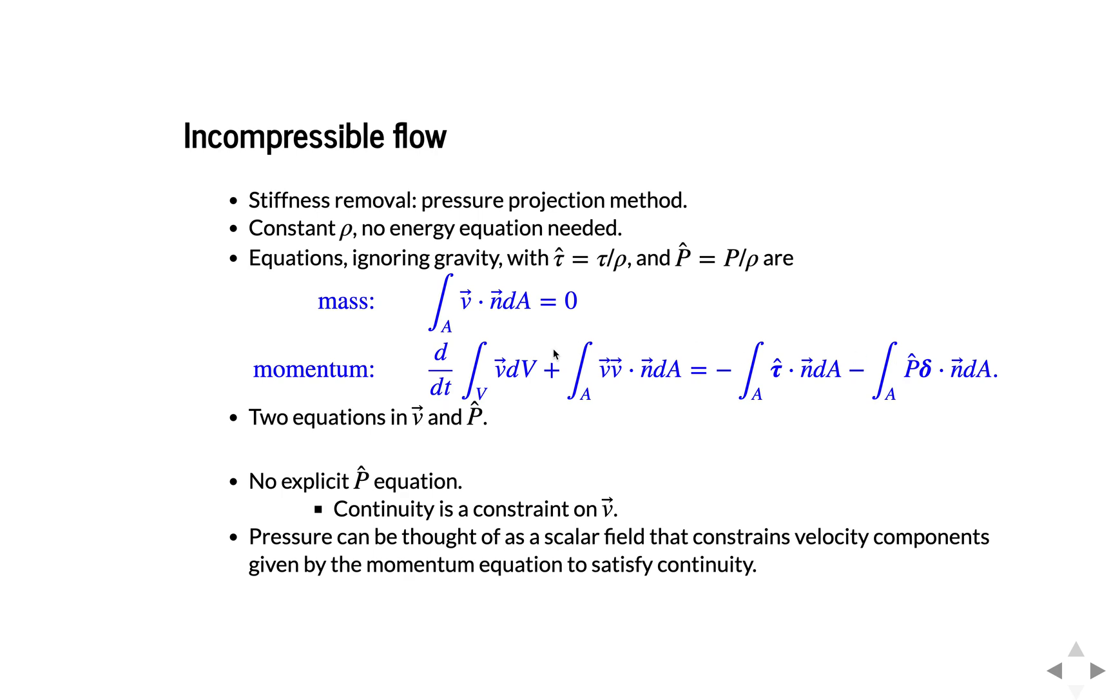So we'd like to rearrange these so that we get an explicit pressure equation. In this sense, you can think of pressure as being a scalar field that constrains the velocity components that are given by the momentum equations, so that they satisfy continuity. So pressure is the scalar that allows the momentum equation to satisfy the mass balance equation. And so we want to derive an equation for the pressure explicitly, so that as we advance velocity, we can also advance the pressure field.